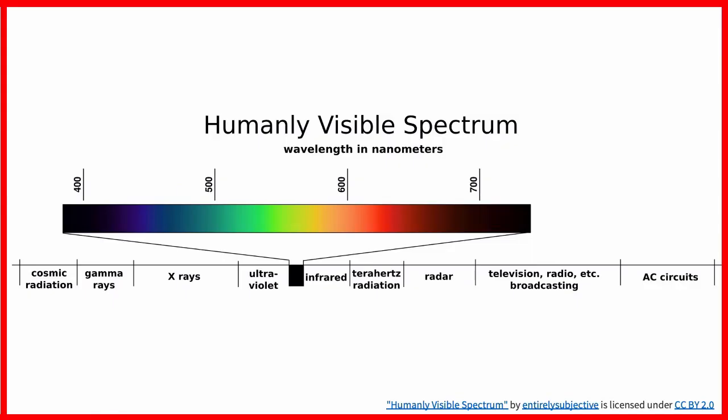In order for us to understand what colour is and why we see colour, we also need to have an understanding of the electromagnetic spectrum and understand what visible light is.